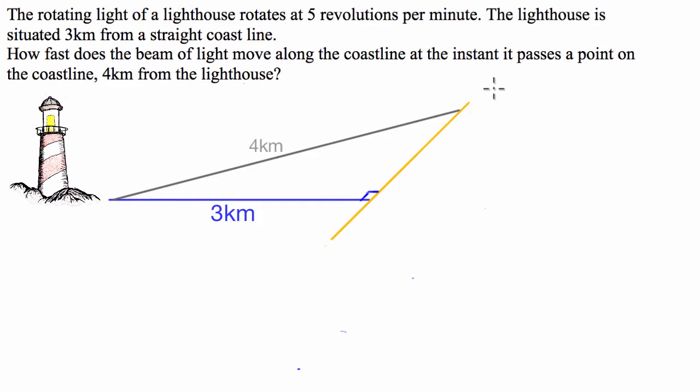What we've got here is a rotating light of a lighthouse that rotates at 5 revolutions per minute. The lighthouse is situated 3km from a straight coastline. We're asked how fast the beam of light moves across the coastline at the instant it passes a point on the coastline 4km from the lighthouse.